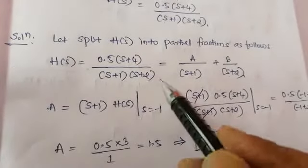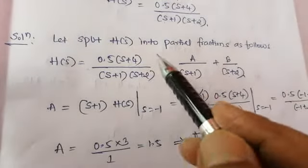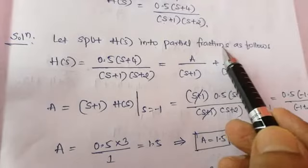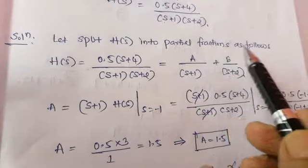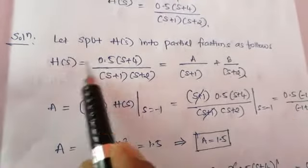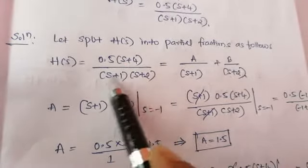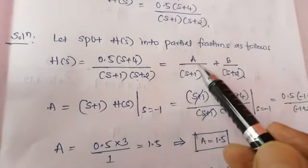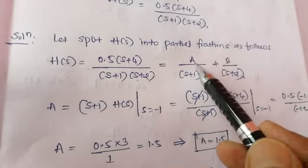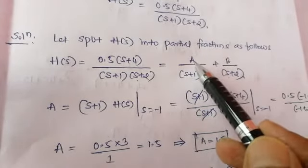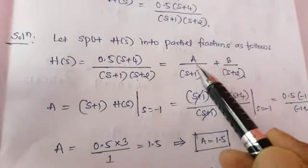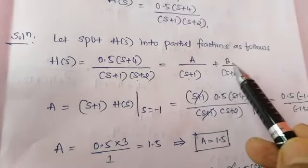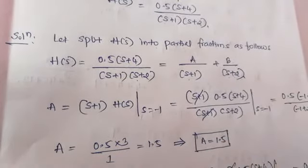Let us split the denominator H(S) into partial fractions as follows. H(S) equal to 0.5 into (S plus 4) divided by (S plus 1)(S plus 2), expressed in terms of partial fractions as A divided by (S plus 1) plus B divided by (S plus 2).